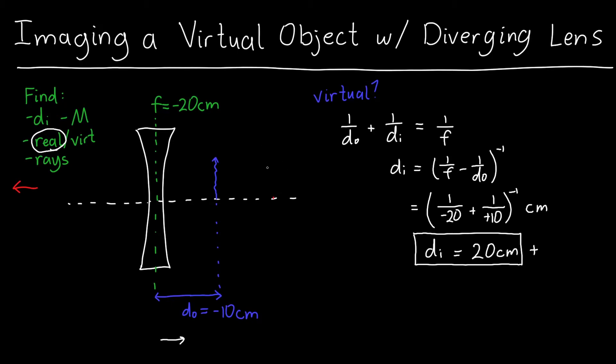The rays will actually converge in real life to form this image. It's not just that they will appear to diverge from a particular location. We can also get the magnification, which we know is just equal to negative DI over DO for a single lens. And we know DI is positive 20 centimeters, so I've got a negative 20 centimeters on the top. And DO is negative 10 centimeters. So these two produce a value of 2.